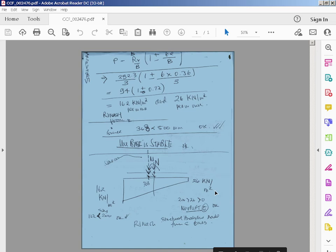And the minimum is 26 kilonewtons per meter square per run, so that means there's no uplift and that means that the base is stable and so the moment is not enough to tip it over.